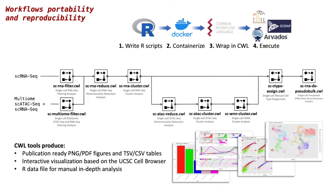CWL stands for Common Workflow Language, which is a standard for describing tools and pipelines in a simple human-readable form. Each tool description supports execution in an isolated runtime environment. It includes a formalized set of inputs and outputs, which allows for combining of tools into workflows.